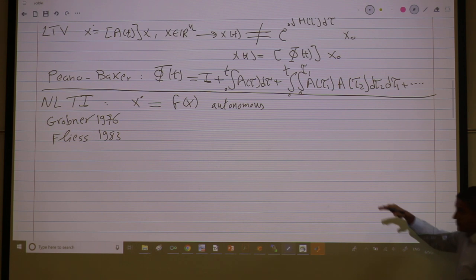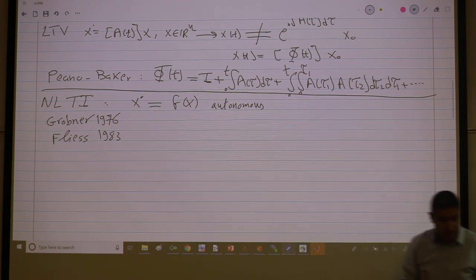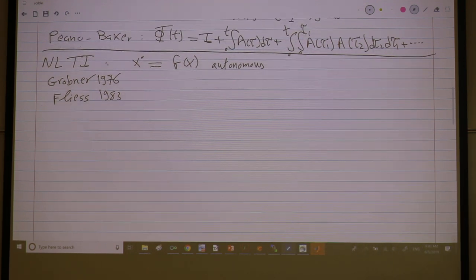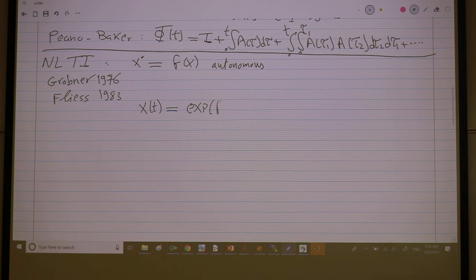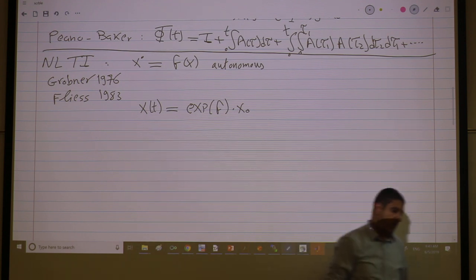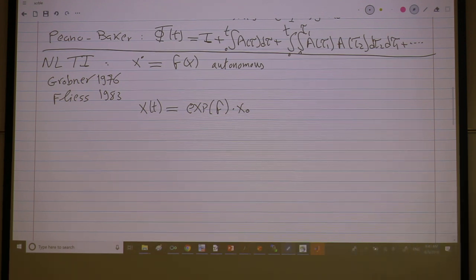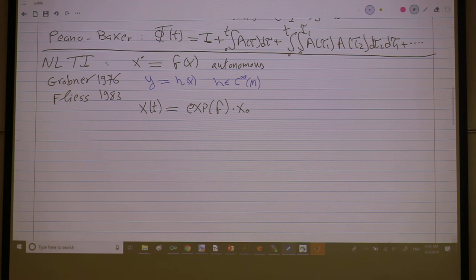We have an exponential representation. I want to emphasize something here. The exponential representation, when it was written for this system, it was not written like this. So x of t equals exponential of f times x naught. You can write it like this, but the main idea was not on the evolution of the initial point. The main idea is on the evolution of an observer, an output function.